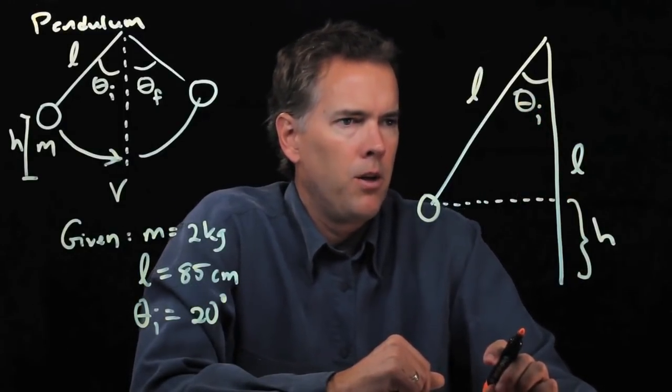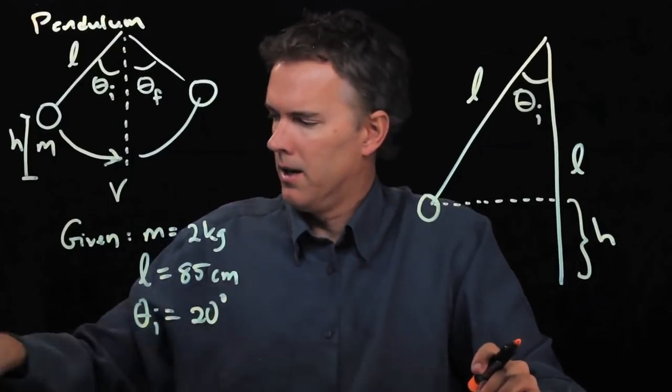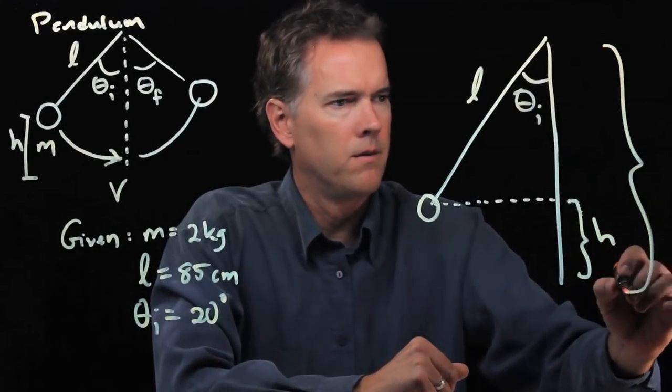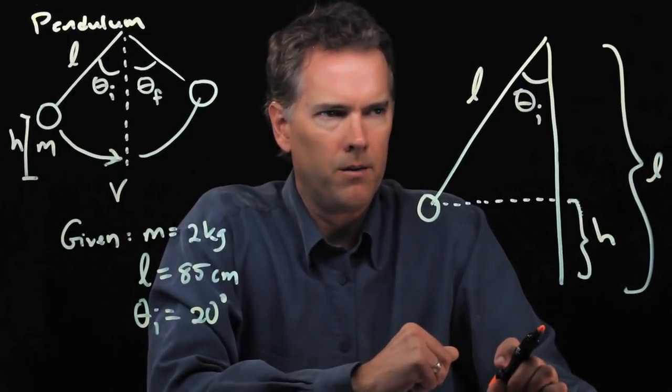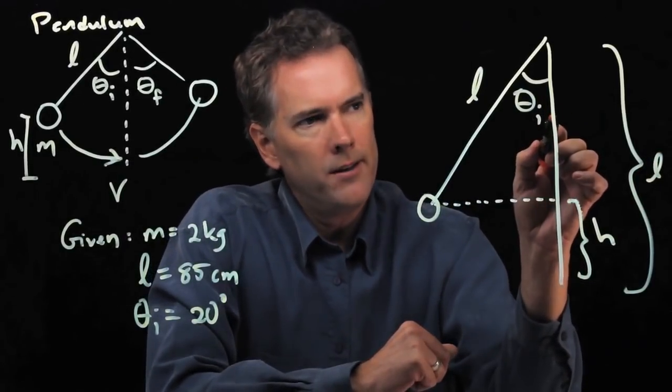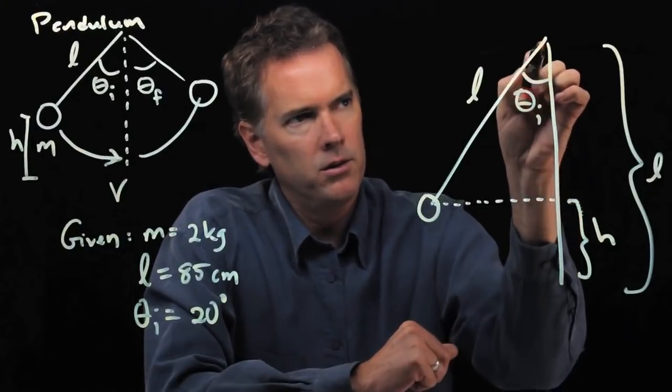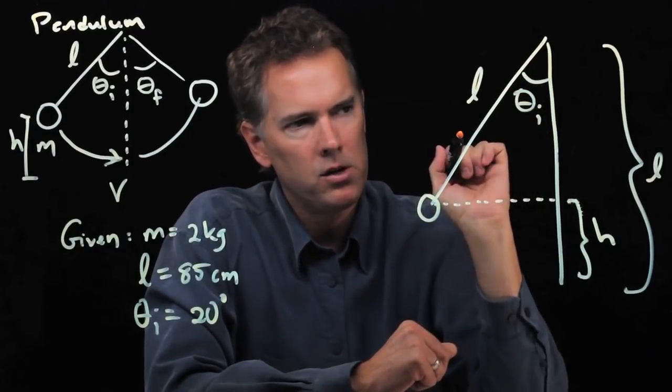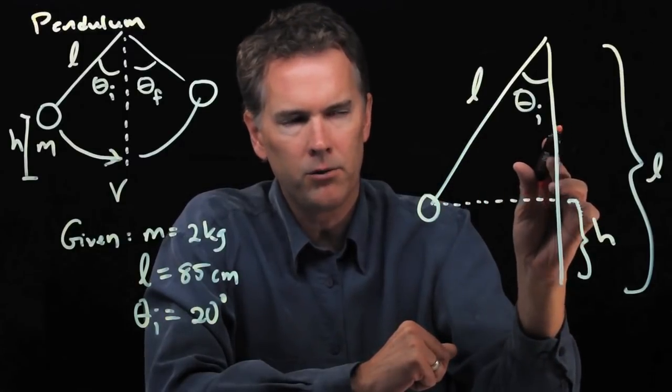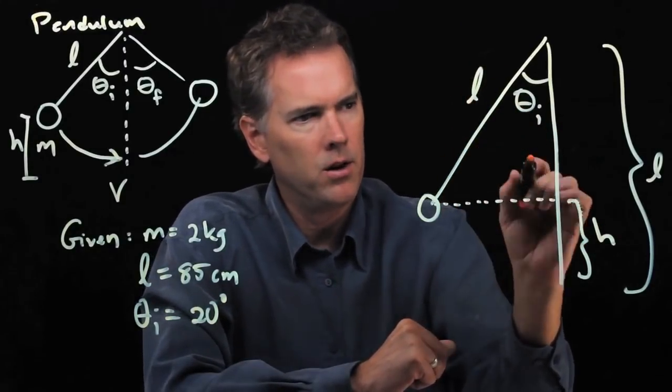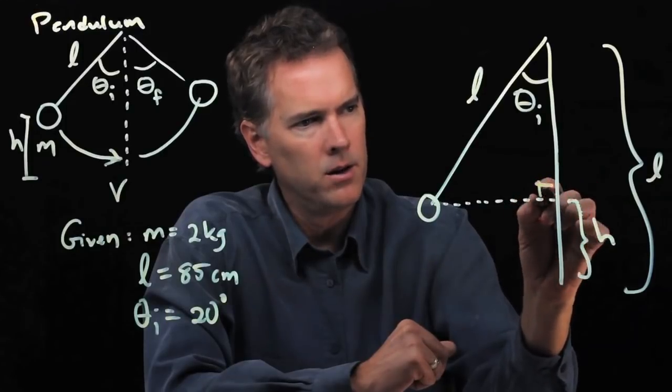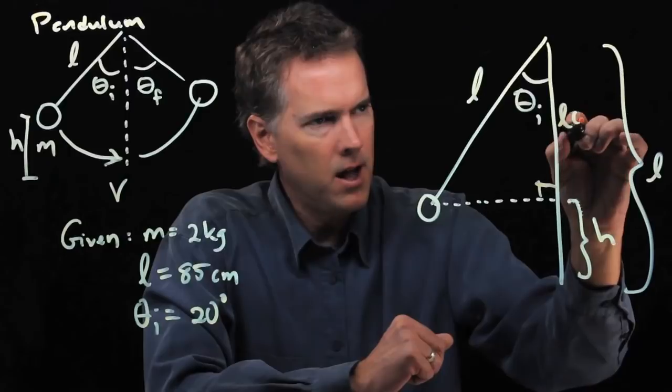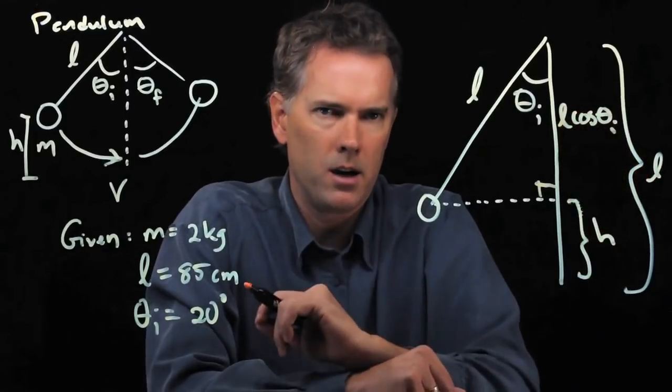We know this theta initial. And we know that the whole length of the string is l. That whole length is l. So, if we knew this section right here, then we could calculate what the height is, h. But we know that section because we have the hypotenuse of the triangle. This is a right angle. We have theta i. And so this is l cosine theta i.